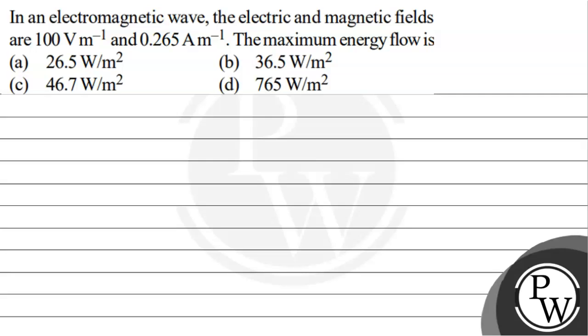Hello, the question says: in an electromagnetic wave, the electric and magnetic fields are 100 volt per meter and 0.265 ampere per meter. The maximum energy flow is: